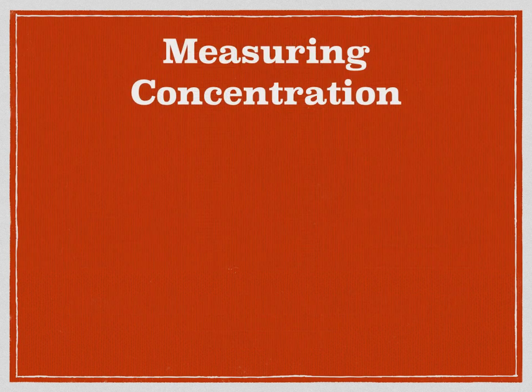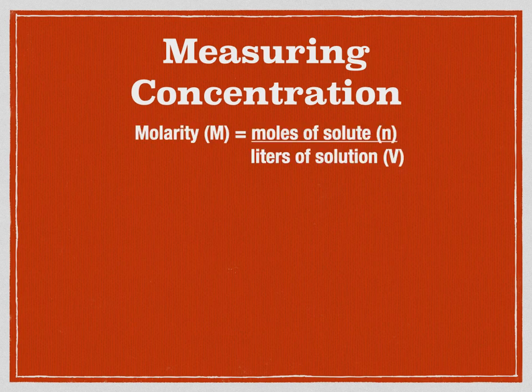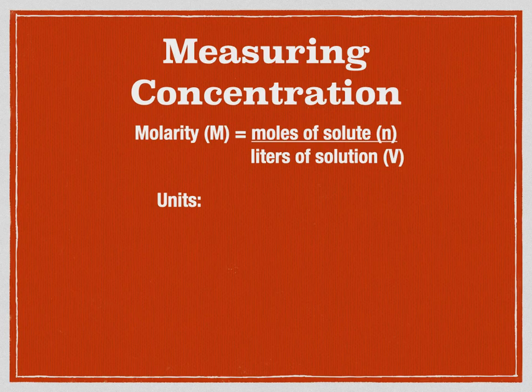There are a bunch of different forms of concentration. The first one we're going to look at — probably the most common one in a first year chemistry course — is molarity. Molarity stands for moles of solute per liter of solution. The variable n on the top is the standard chemical variable for number of moles. The units are moles per liter, and the derived unit for molarity is given a simple capital M.